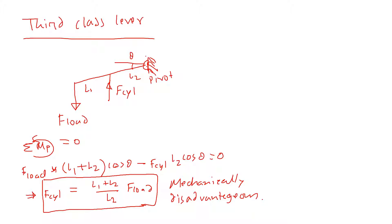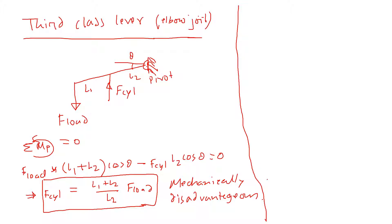You may ask why we would use a mechanically disadvantageous lever. It depends on the application. The elbow joint is basically a third-class lever — it is not very strong, which is actually good because if it were too strong it could break bones. The ankle joint is a second-class lever, where we need to carry body weight. Similarly, in hydraulic systems we may need weaker or stronger force depending on the situation — all three lever types are used.